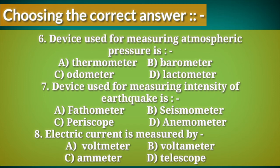Sixth question: the device used for measuring atmospheric pressure is — A. Thermometer, B. Barometer, C. Odometer, D. Lactometer.